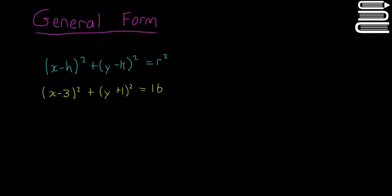So now we're going to look at having the circle in the general form. I'll explain what the general form means. We've looked at this form before: x minus h squared plus y minus k squared is equal to r squared. One of the examples we had in the last video was x minus 3 squared plus y plus 1 squared is equal to 16.